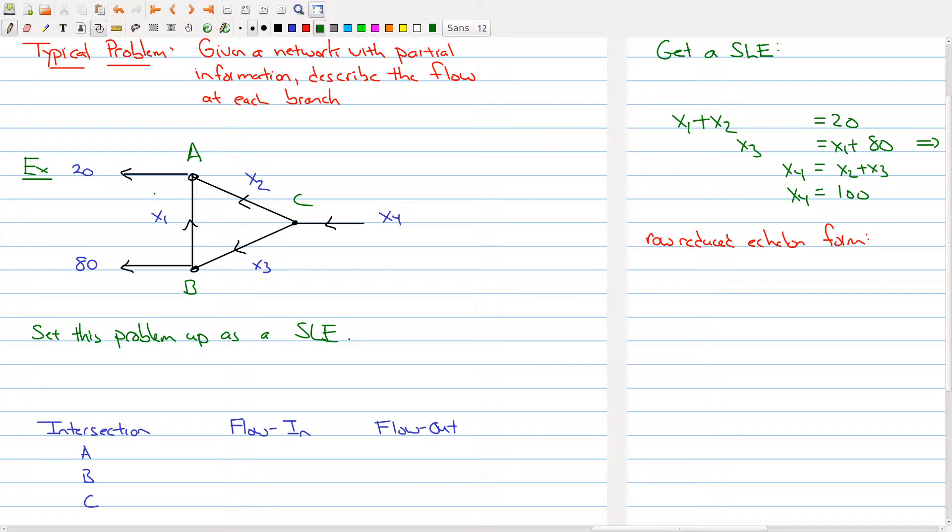Welcome back. I hope you had a chance to think about this problem. We have a network written right here and what we're trying to do is solve for what x1, x2, x3, and x4 are given the partial information.